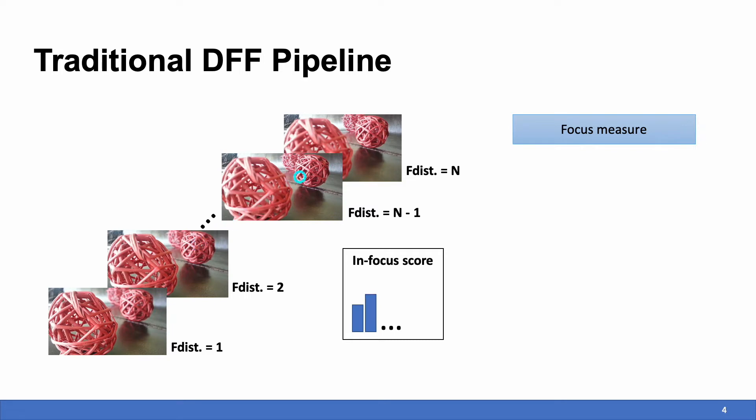This measure will be applied to all the corresponding pixels, and the score will be compared. In the showing case, the N-1 frame has a high score, therefore, the focal distance of this frame will be used as an initial depth estimation of this pixel. The same thing will be done for all the pixels, and a focus volume will be used to store and compare all the scores.